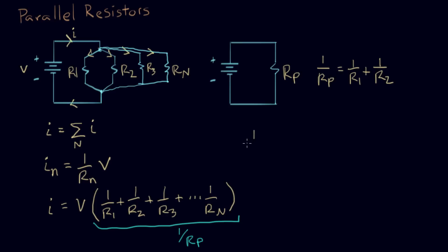So for n resistors, multiple resistors, one over Rp, the equivalent parallel resistor, is equal to one over R1 plus one over R2 plus dot dot dot one over Rn. So this tells you how to simplify any number of parallel resistors down to one equivalent parallel resistor.